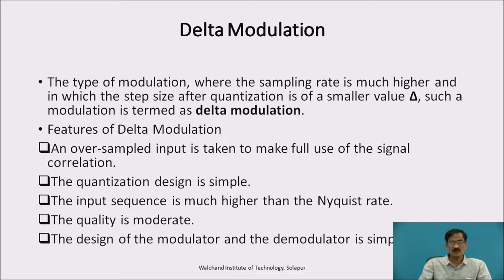Now we are going to discuss delta modulation. The type of modulation where the sampling rate is much higher, and in which the step size after quantization is of a smaller value delta. Such a modulation is termed as delta modulation.